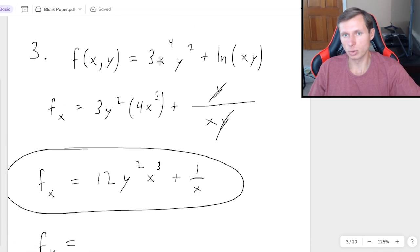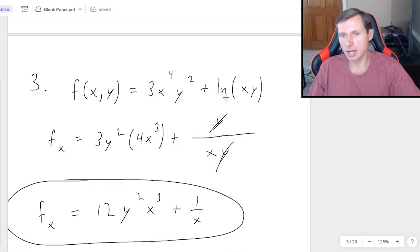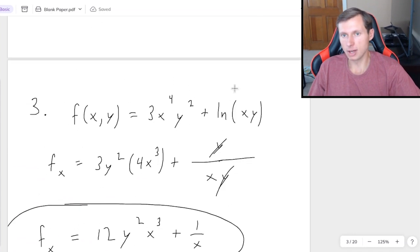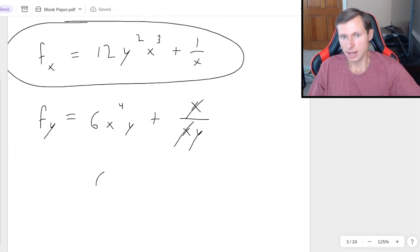And then for partial y, derivative of 3x to the fourth y squared. You bring the 2 out from the y squared, giving you 6x to the fourth times y to the first, which is really just y. And then same idea for natural log of x times y. Derivative in the numerator, derivative of x times y. The x is just the coefficient. And since it's the coefficient rule, derivative will be x. And then divide it by the original xy. Once again, the x's cancel. And we will get 6x to the fourth times y, plus 1 over y. There is our partial y derivative.